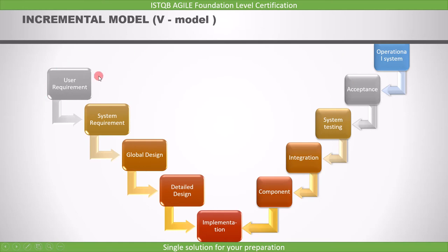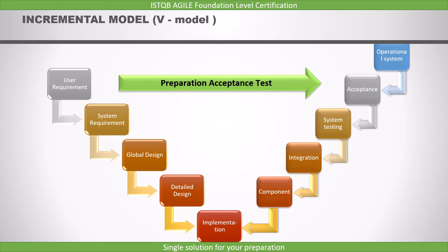Once you have the user requirement, even if you have not done any of the steps below, you can start preparing test cases from the requirement for the acceptance testing. Similarly, when you're in the system requirement stage, you can start preparing for the system test. Since you have the requirements, you can start writing the test cases. Once the software comes, you can execute them. The process is happening in parallel — when the development activity starts, the testing activities can also start at the same time.